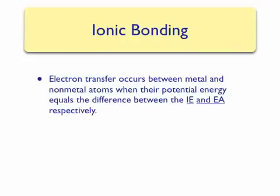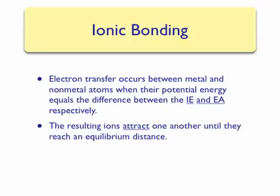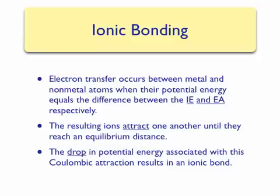As mentioned previously, both the sodium and chlorine atoms need to be in the gas phase to react. Electron transfer will occur between the metal and non-metal atoms when their total potential energy equals the difference between the ionization energy of the metal and the electron affinity of the non-metal. When the electron transfer occurs, the resulting ions will attract one another since they have equal and opposite charges. This attraction brings the ions closer together until they reach an equilibrium distance, and the total potential energy of the ions decreases — resulting in an ionic bond. Therefore, the forces that hold ionic compounds together are Coulomb attractions between two oppositely charged ions.